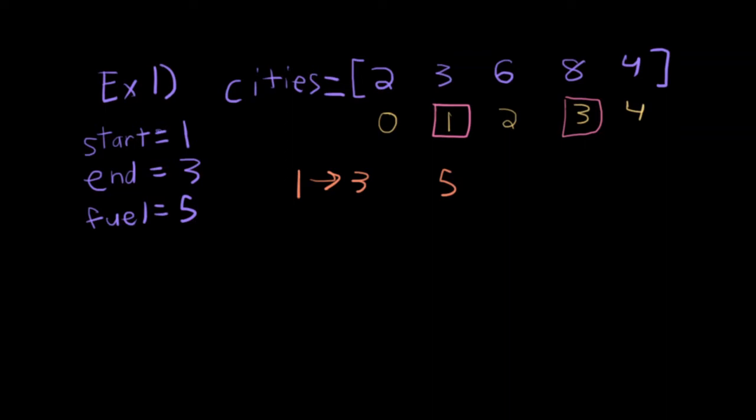We could go from 1 to 3 directly. That ends up using five units of fuel. 1 to 3 uses five units of fuel because the absolute difference between 3 and 8 is 5. We could also go from 1 to 2 to 3. If we went from 1 to 2, that's going from 3 to 6, that uses 3 units of fuel. And then from 2 to 3, that uses 2 units of fuel. The difference between 6 and 8 is 2.